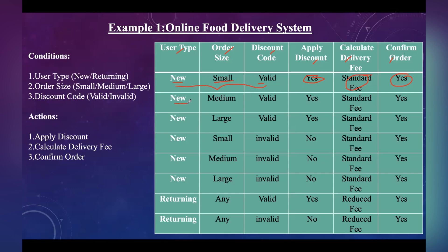User type has two types: new and returning. We are taking both and considering all possible combinations. Order size has three types: small, medium, and large. Discount code has two values: valid and invalid. So we are considering all valid and invalid combinations for new and returning users.